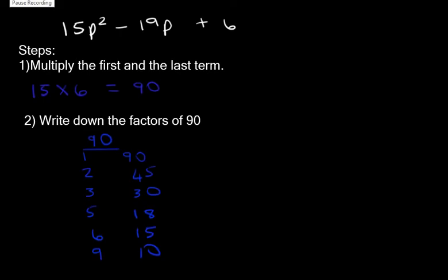If you have written down the factors of 90, you should have 1 and 90, 2 and 45, 3 and 30, 5 and 18, 6 and 15, and 9 and 10. Now we spoke about type 1 and type 2 trinomials. The same rule applies.